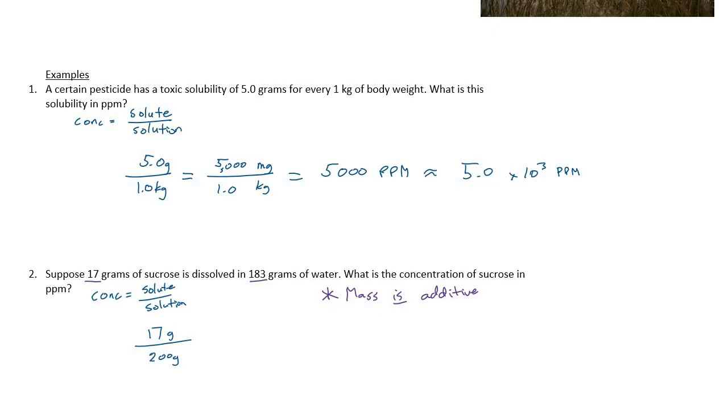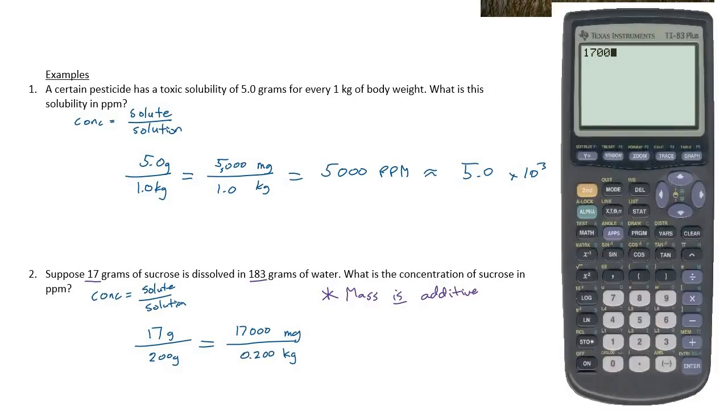So now again, we want to convert this into parts per million. So if we would turn this into milligrams per kilogram, then we would end up with parts per million. So 17 grams is 17,000 milligrams, and 200 grams is 0.200 kilograms. And now if we do that calculation, we find that the number of parts per million is 85,000. Because again, if you turn it into milligrams per kilogram, or something per million something, you are automatically using parts per million. And let's report this as 8.5 times 10 to the fourth parts per million.